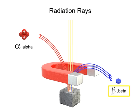Beta rays are a stream of negatively charged electrons. After passing through the magnet, they bend in the opposite direction of the alpha ray. Because electrons of the beta ray have less mass than the protons and neutrons in the alpha ray, the beta ray undergoes a more pronounced bend.